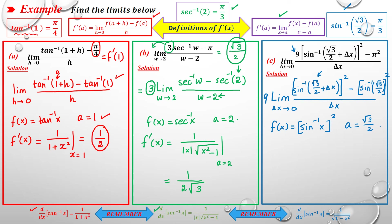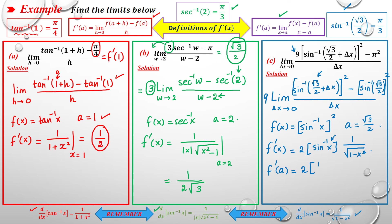We find f'(x) using the chain rule: f'(x) = 2·arcsin(x) · (1/√(1-x²)). Replacing a = √3/2: f'(√3/2) = 2 · arcsin(√3/2) · 1/√(1 - 3/4). Since arcsin(√3/2) = π/3, and √(1-3/4) = 1/2, using a calculator this gives 4π/3.